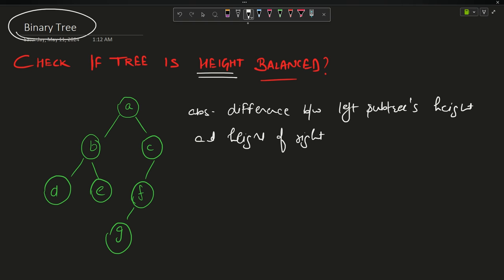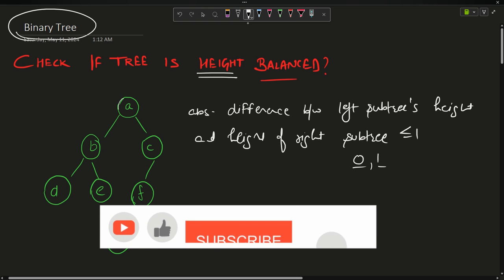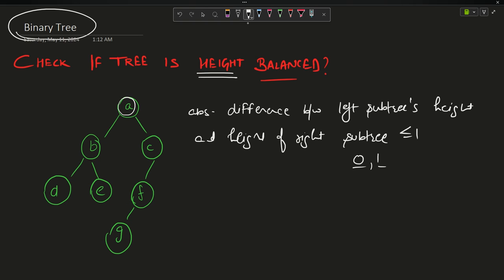Less than or equal to one means either zero or one. If I check for node A, the height on the left is 2 (nodes B, D) and height on the right is 3, so 3 minus 2 is 1 — that is correct. Height balance will have to be checked for each and every node.